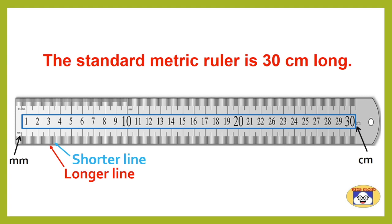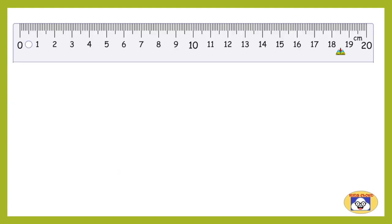You will find alternate longer and shorter lines that are equally spaced. Now let's learn more about these lines. Here we have shown another 20 centimeter ruler.